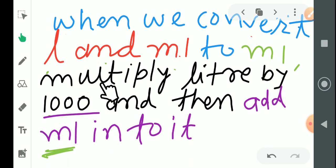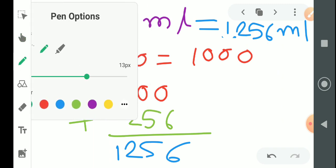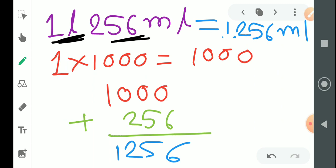Whatever the liter is given, whatever the number is given of liter, multiply it by 1000, and then multiply it by 1000, and then add ml into it. Now let's see example and then let's understand it. One liter 256 ml. We have two different pieces, just one liter and ml. You have to do what is the liter. You have to multiply it by 1000.